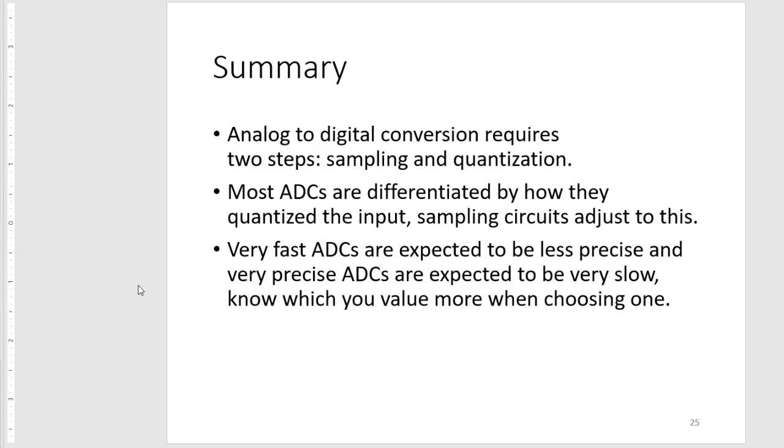In summary, in order to convert your analog signal to digital code in hardware, you will require sampling and quantization. Most of our ADCs are differentiated by how they quantize the input, and our sampling circuits adjust to this. Very fast ADCs are expected to be less precise, and very precise ADCs are expected to be very slow. Depending on your system, if you need to be fast or if you need to be precise, that should affect your choice in choosing which ADCs to use.